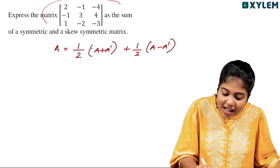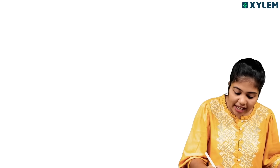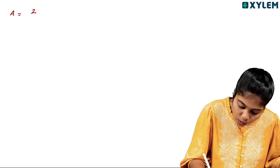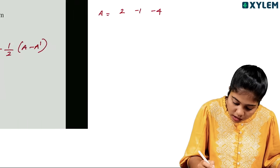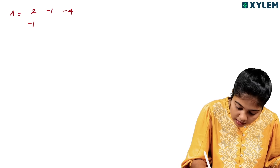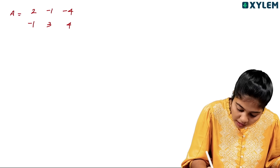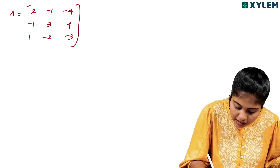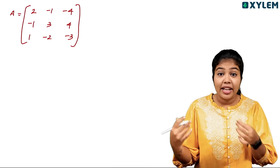A is equal to [2, -1, -4; 1, -2, -3]. This is A, already given in the question.